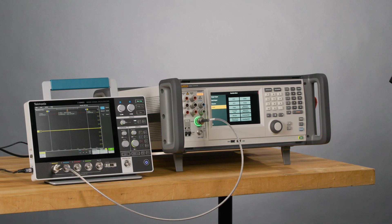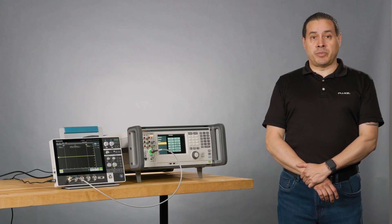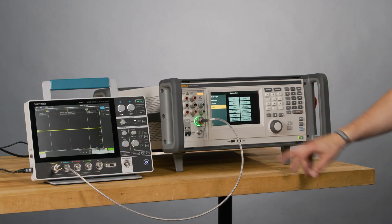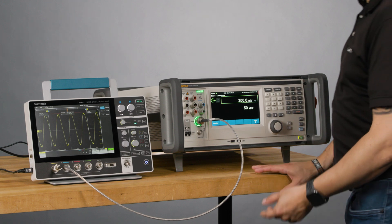I'm going to calibrate a Tektronix oscilloscope using the 5560A Multi-Product Calibrator from Fluke. In this case, I'm setting my scope options. I'm going to use level sine, 200 millivolts, 50 kilohertz, and I'm seeing the signal. This is going to be visual.